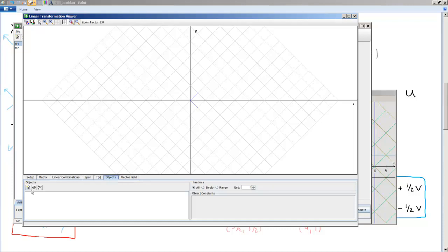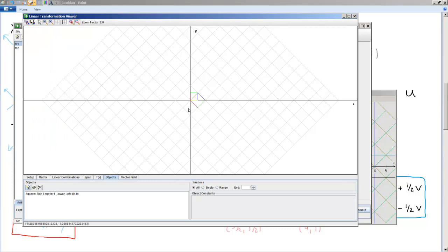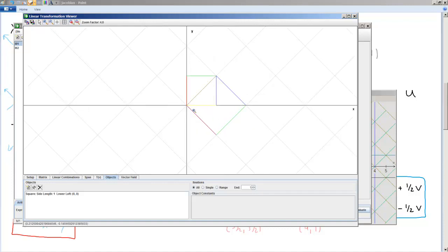We can look at the transformation of a particular object. So we'll click the Object tab. I'm going to click New Object. And then I'll do a square, say, side length 1 with lower left at 0, 0. And I'll draw that. And I'll have to zoom in just a little bit. So you can see our original square and the transformation of the square. The original square and its rotated transformation.